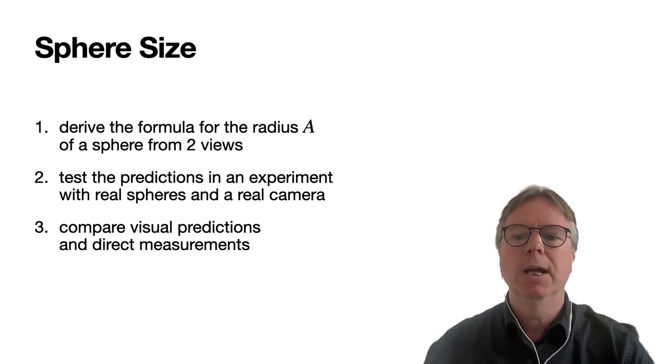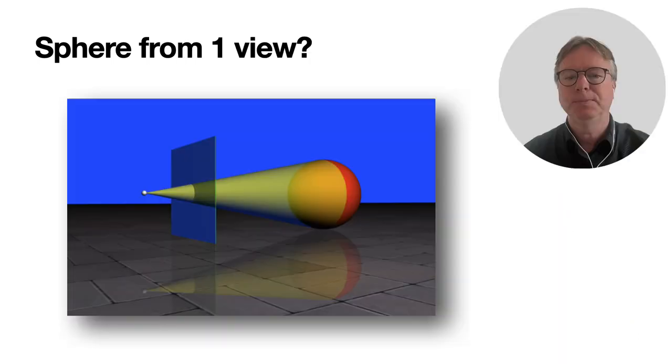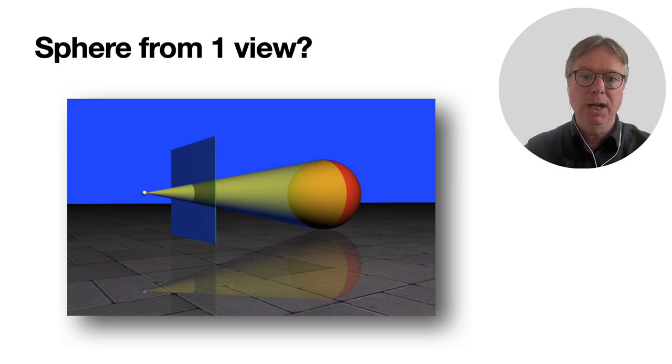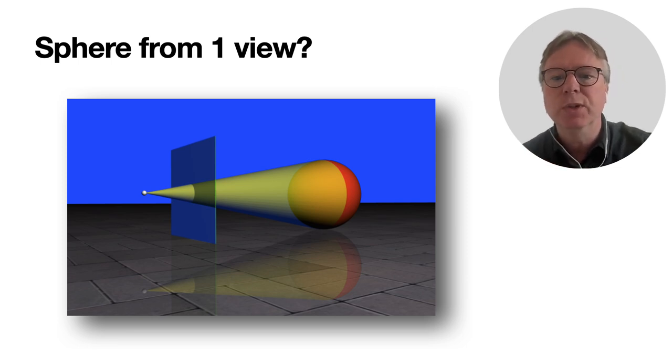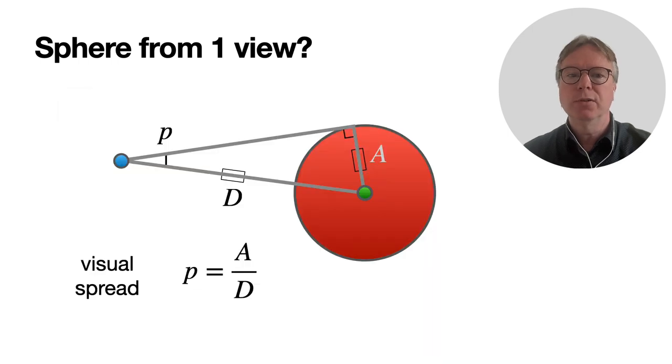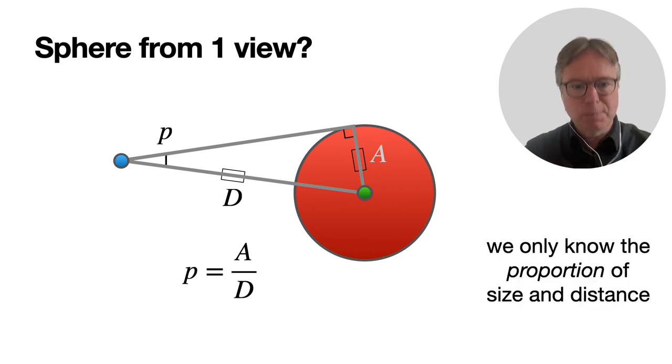What's the situation if we have a sphere and we have a projection on an image, a central projection? Then we have a visual cone, the yellowish-greenish cone there. If we look at the formulas, which I've done in an earlier lesson, we can express the visual spread P as a proportion of quadrants A and D. Note it's only a proportion, so we know the proportion if we can measure P, but we don't know what A or D is.